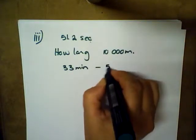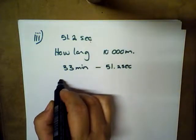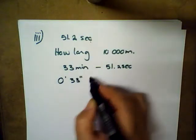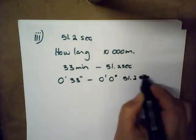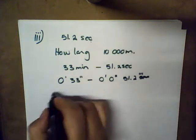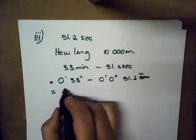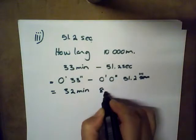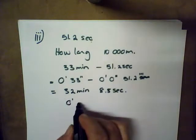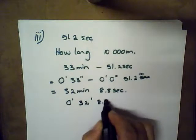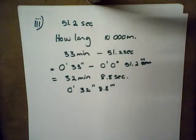So if I subtract 51.2 seconds from it I will get the right answer. On your calculator tap in 0 hours 33 minutes minus 0 hours 0 minutes 51.2 seconds. That would give us an answer of 32 minutes 8.8 seconds. On your calculator screen it will look like 0 hours 32 minutes 8.8 seconds.